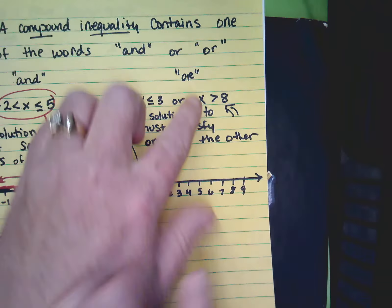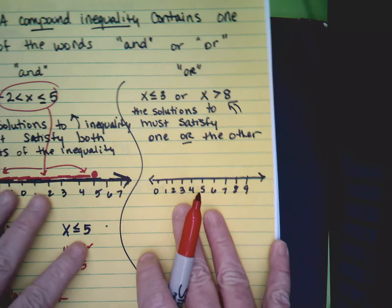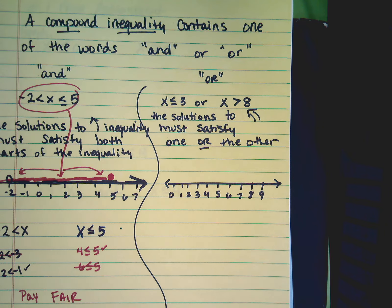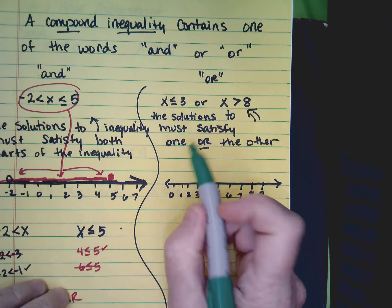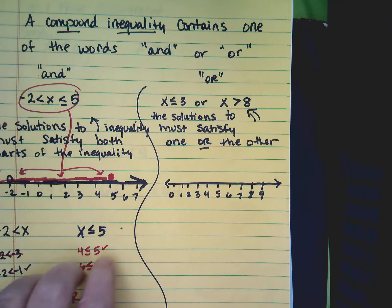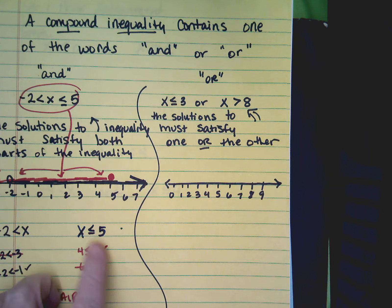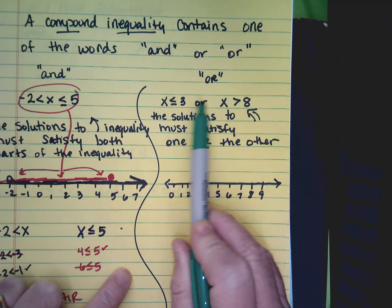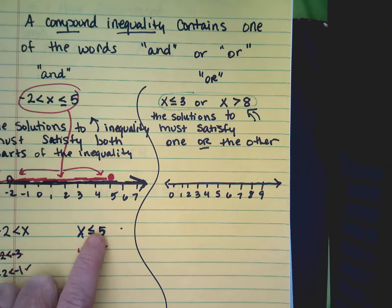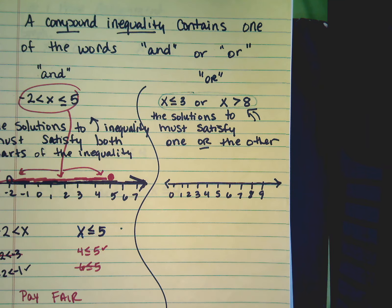We also have graphs for the or problem. This is or between them. And they will have two inequalities already split with the word or between it. You won't have to split it like we did that one. The solution to this problem must satisfy one or the other.